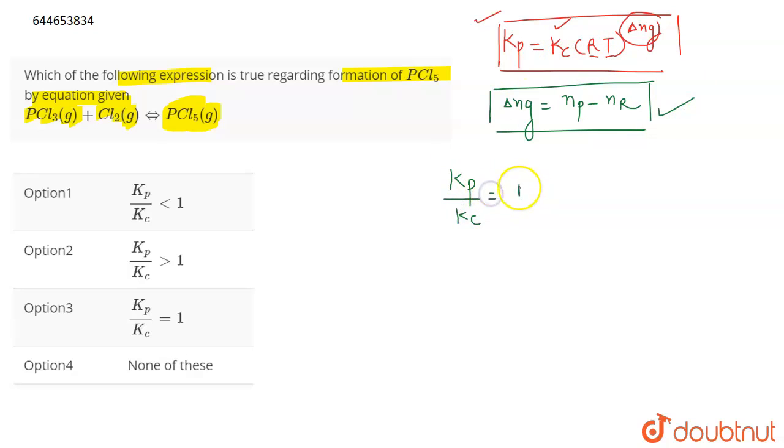Now if we calculate the value of delta ng for this particular reaction, delta ng will be one mole on the product side minus two moles on the reactant side.